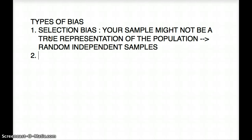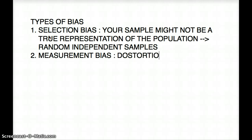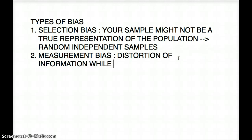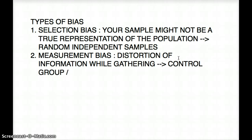The next one is measurement bias. What exactly is measurement bias? It's whenever you're gathering information and you might be gathering it incorrectly — it's the distortion of information while gathering it. How can you beat measurement bias? You can beat measurement bias by having a control group or a placebo group to combat it.